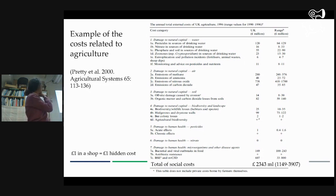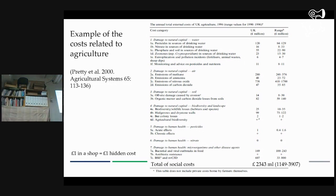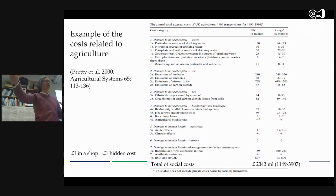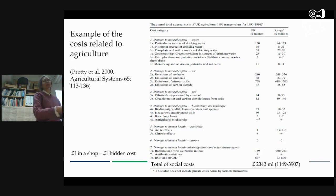This is something calculated for the UK already 20 years ago. The total social cost is 2.3 billion pounds. So it's quite a big amount of money. If you relate it to the value of food produced in the UK, it's one extra pound being paid by society for producing one pound of food. All of us pay double, at least, for food that we buy in the shop.